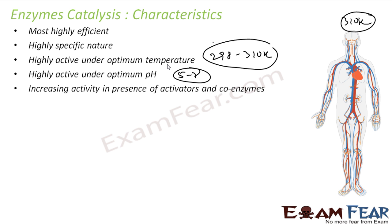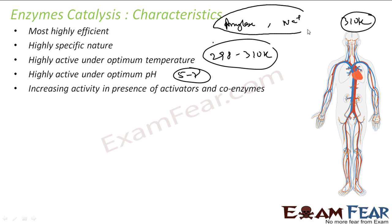There is increasing activity in the presence of activators and coenzymes. A small amount of activators can increase the activity of enzymes. Vitamins are generally activators. Metal ions such as Na+, Mn+, and Co+ are also activators. For example, the amylase enzyme is very powerful in the presence of sodium ions — sodium acts as an activator.